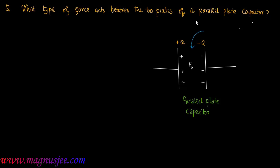There is vacuum as the dielectric medium between the two plates. This dielectric medium is vacuum, which has permittivity epsilon 0.